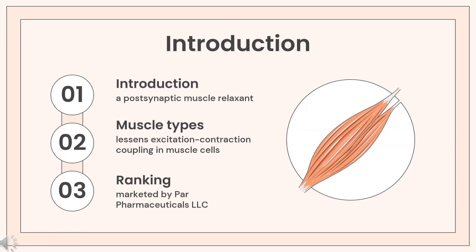Dantrolene sodium, sold under the brand name Dantrium among others, is a postsynaptic muscle relaxant that lessens excitation-contraction coupling in muscle cells. It achieves this by inhibiting Ca²⁺ ions release from sarcoplasmic reticulum stores by antagonizing ryanodine receptors. It is marketed by Par Pharmaceuticals LLC as Dantrium in North America, and by Norgon BV as Dantrium, Dantamacrin, or Dantrolene in Europe.